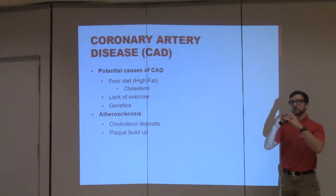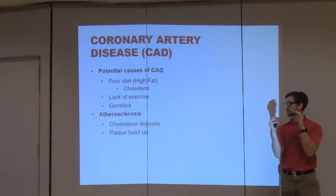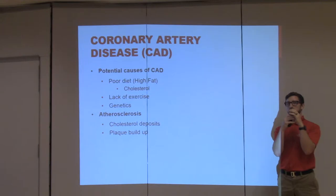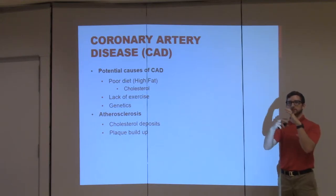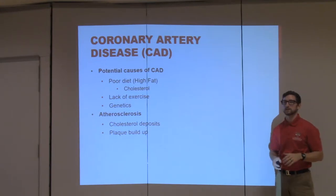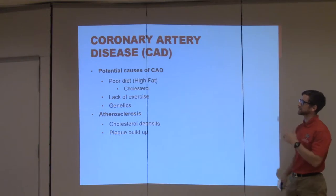You have the walls of the arteries, and when the walls of the arteries get damaged, cholesterol deposits into those walls and then plaque starts to build up. So it starts to occlude the lumen — the hole through which blood is flowing through the blood vessel. The more occlusion you have, the harder it is for blood to flow and the harder it is for oxygen to get to the working tissues of the heart.